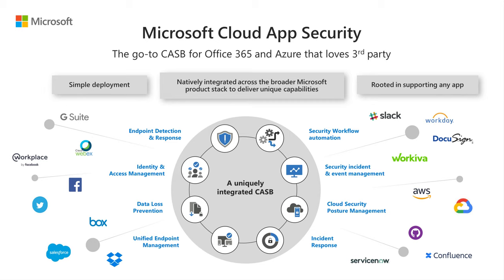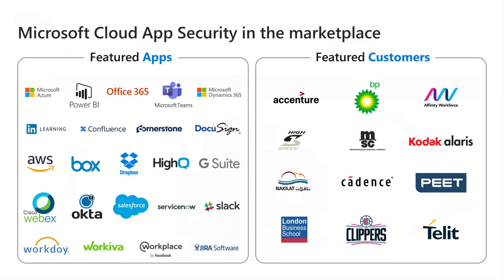Microsoft Cloud App Security covers many different capabilities — from endpoint detection and response to data loss prevention, identity and access management, and information protection. The cool thing is it not only works with Office 365 and Azure but also with third-party apps like Box, G Suite, Salesforce, and others, which expands the value and turns it from a product into a solution that can solve real business problems.